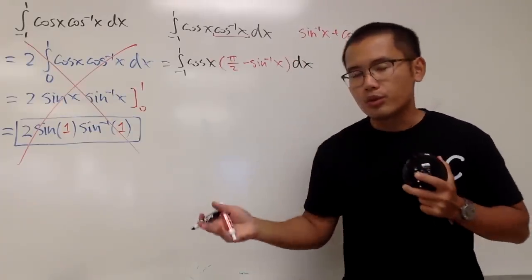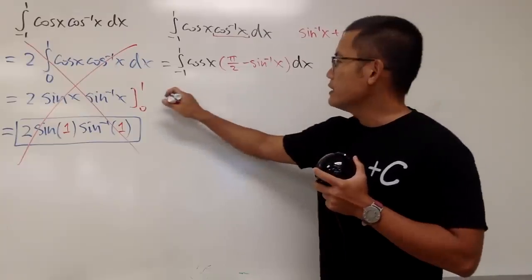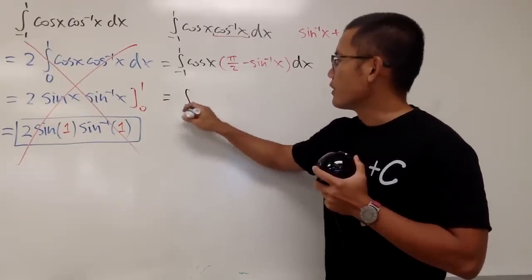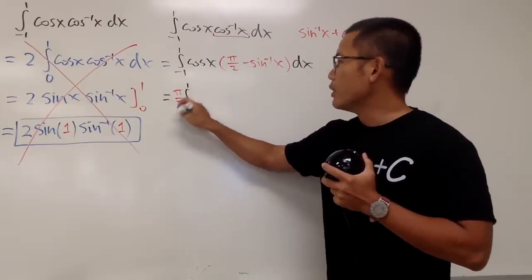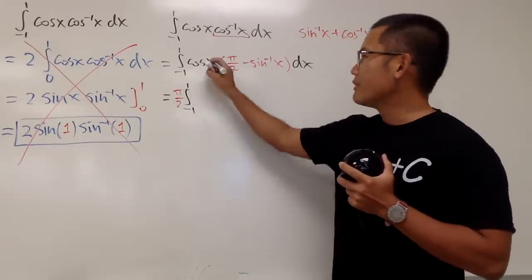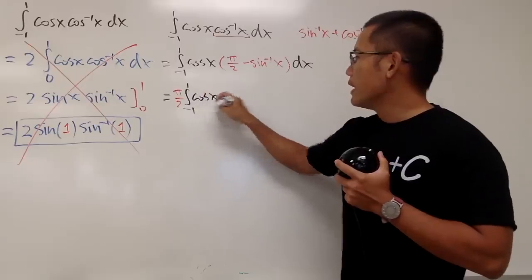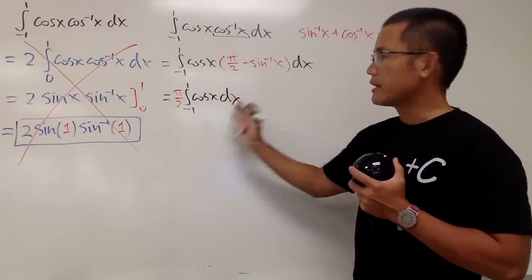Distribute and then break down into two integrals. So, the first integral that we'll get is the integral from negative 1 to 1, and this times that, perhaps we can just put the π over 2 in the front, and we have the cosine right here, and that's close the integral, like this.